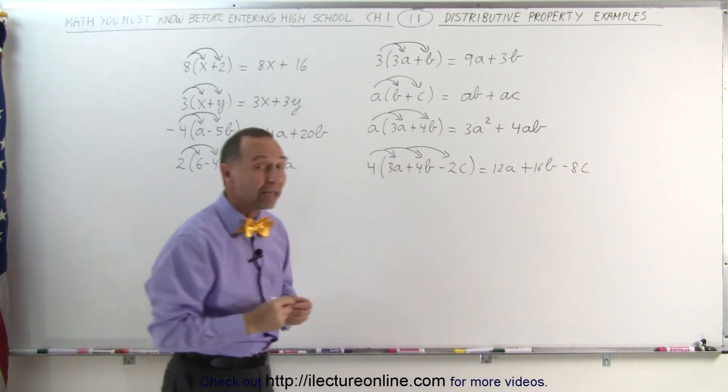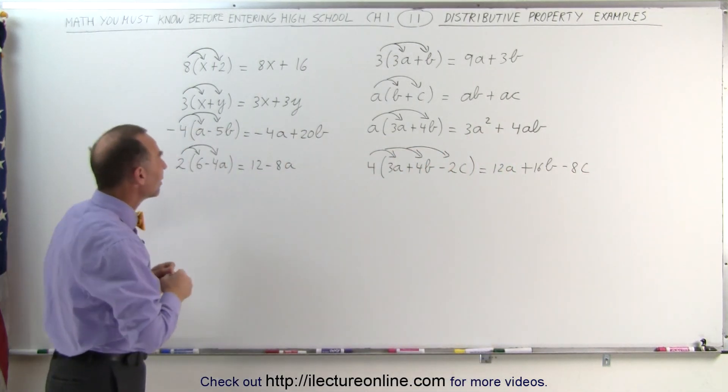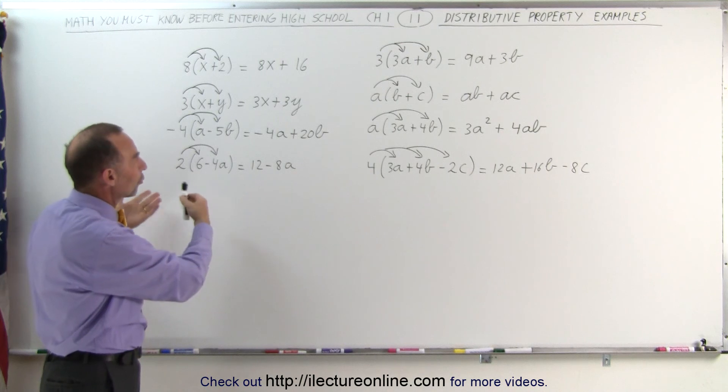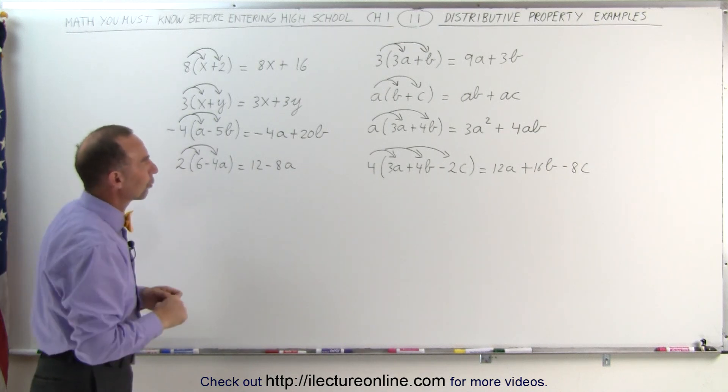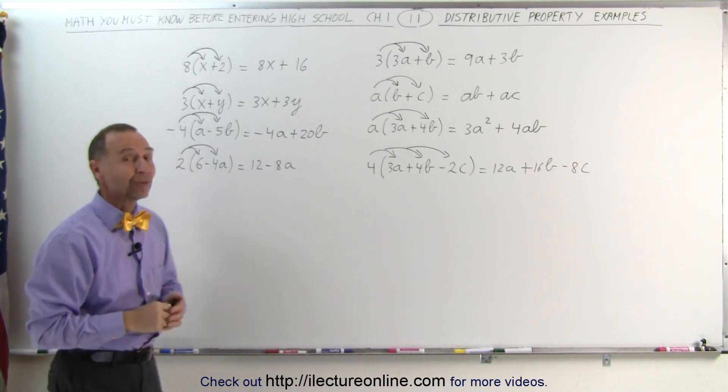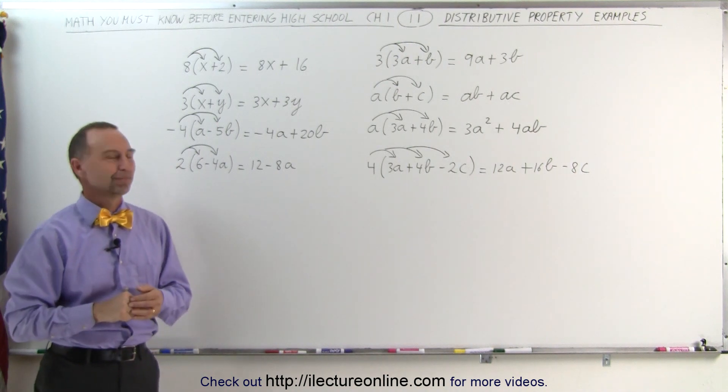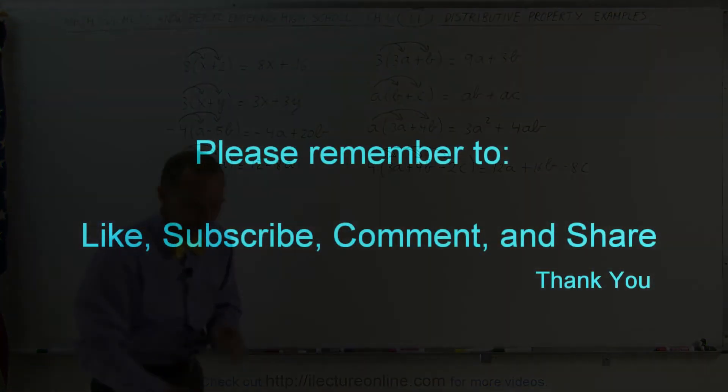And that's how we utilize the distributive property in case we have to multiply numbers or constants or variables times a binomial or a trinomial. That's how it's done. Thank you.